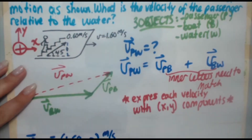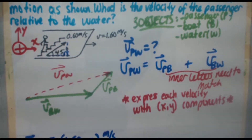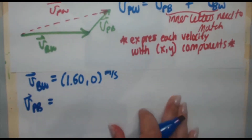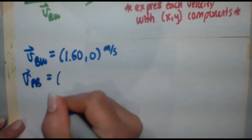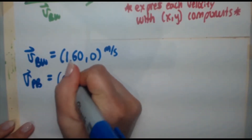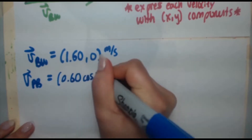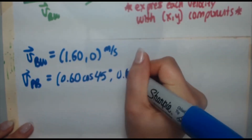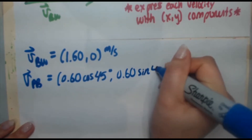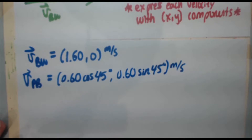For V-B-W in component form: (1.60, 0) meters per second. For V-P-B, the passenger is moving at an angle, so there's both an X and Y component. We use sine and cosine since the components form a right angle. The X component is 0.60 times cosine 45 degrees, and the Y component is 0.60 times sine 45 degrees, both in meters per second.